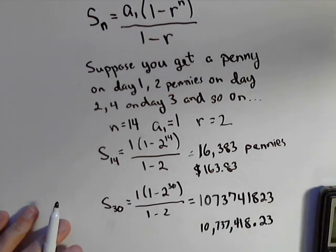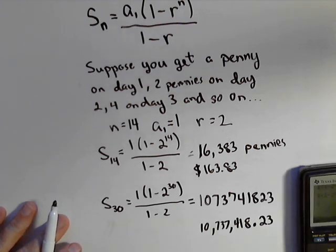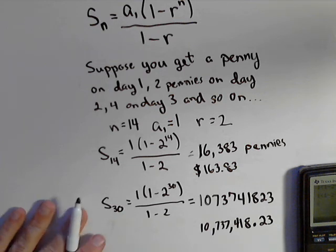We'd have over 10 million dollars if we did that for 30 days. Not a bad deal, it's the power of doubling. But that's how we can sum up a geometric series, a finite geometric series with our formula.